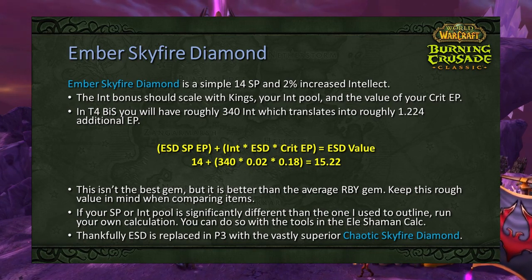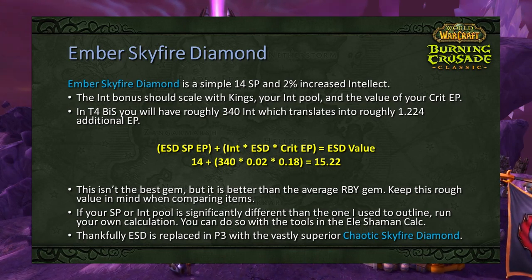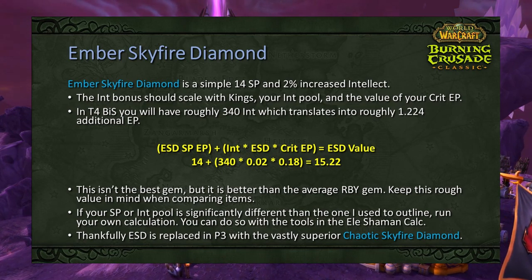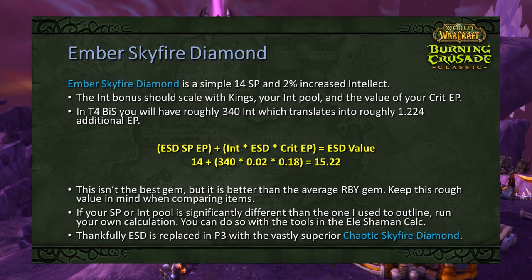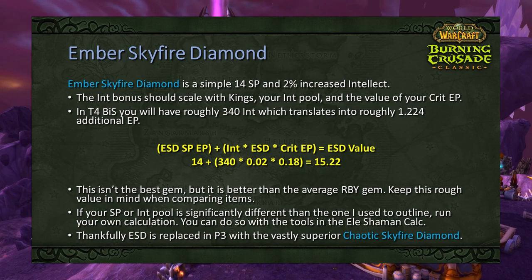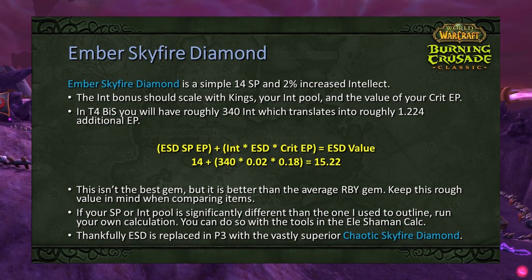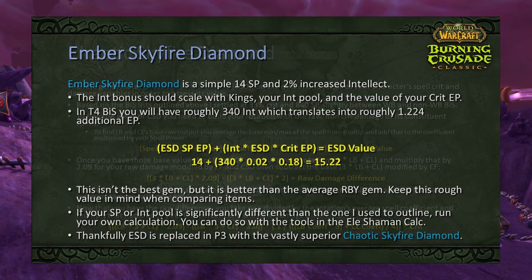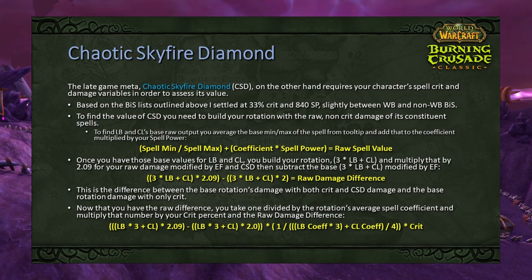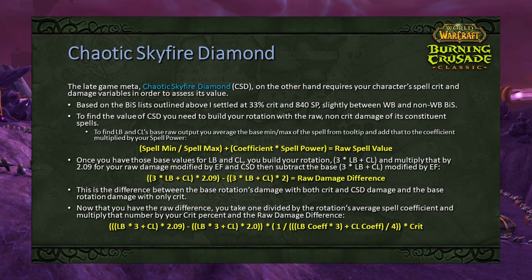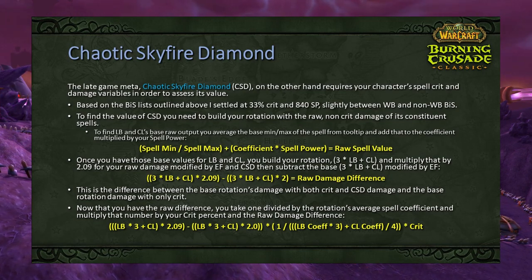There are three conditions under which you would use Ember Skyfire Diamond: one, you are not using tailoring; two, you have a helm with a meta socket; and three, Chaotic Skyfire Diamond is not in the game. Ember Skyfire Diamond provides 14 spell power and 2% increased intellect. This bonus scales with Kings and your Mana Pool, with a total value of roughly 15.22 EP. If you meet those three criteria, Ember Skyfire Diamond is a reasonable, streamlined choice.